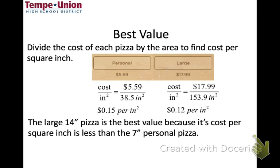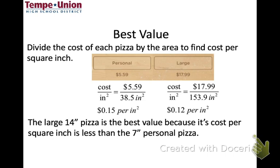For the personal pan: $5.59 ÷ 38.5 ≈ $0.15 per square inch. For the large pizza: $17.99 ÷ 153.9 square inches gives a lower cost per square inch. The lower cost means it's cheaper, so the bigger pizza is a better deal — which is usually the case, since pizza places encourage you to buy more.